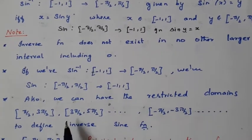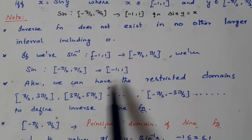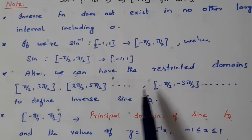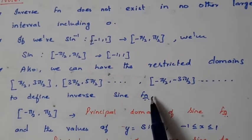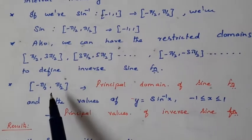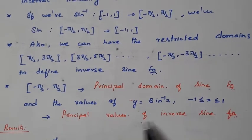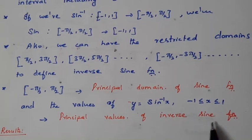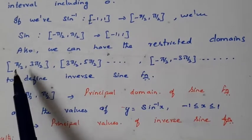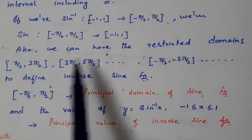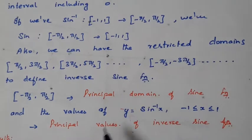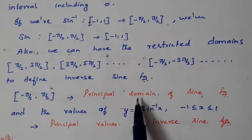We can also have other restricted domains for the sine function, such as π/2 to 3π/2, 3π/2 to 5π/2, or −π/2 to −3π/2, and we can define the inverse sine function for those too. But among all these, the smallest one is −π/2 to π/2. That domain is called the principal domain of the sine function, and the corresponding y values are called the principal values of the inverse sine function.